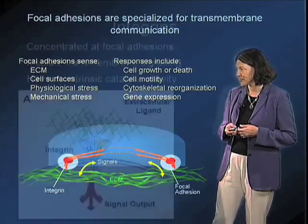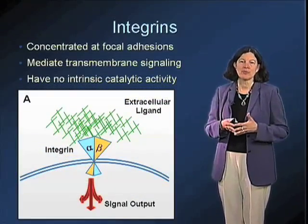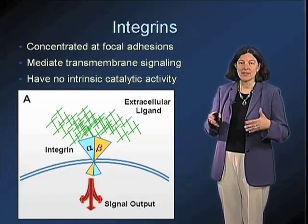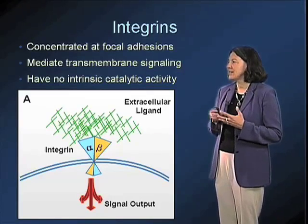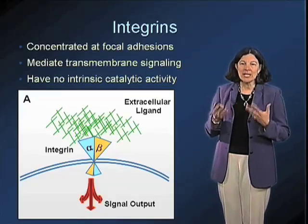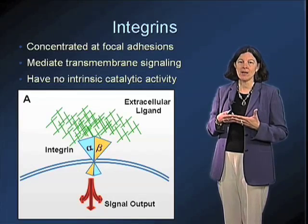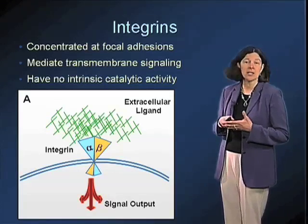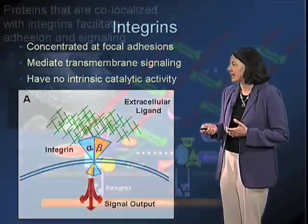Integrins are the primary receptors for extracellular matrix that are located at these specialized adhesion zones. They're concentrated at these focal adhesions, they mediate transmembrane bidirectional signaling, and a really interesting challenge has been to understand how they signal to affect so many really important cell behaviors, because unlike growth factor receptors, they themselves don't have any intrinsic catalytic activity.